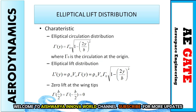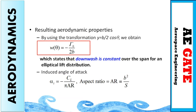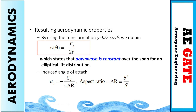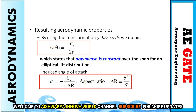Now comes elliptical lift distribution. These are the basic formulas for elliptical lift distribution, and notably there is zero lift produced at the wing tips. The downwash angle is denoted by negative of circulation divided by 2b, and the downwash is constant over the span for an elliptical lift distribution. The induced angle of attack formula is: alpha_i = -C_L / (pi * AR), where AR is the aspect ratio equal to b-squared divided by S.